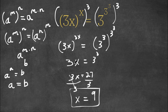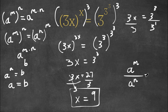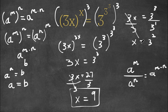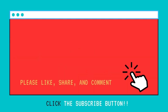Our second way is 3x is equal to 3 to the power of 3. We simply divide by 3 at the start. And 3 to the power of 3 divided by 3 — using the rule a to the power of m over a to the power of n equals a to the power of m minus n — this is 3 to the power of 3 minus 1, which is simply just 3 squared. On the left hand side, these cancel out, and we get x is equal to 3 squared. And 3 squared is 9. So we get x is equal to 9.